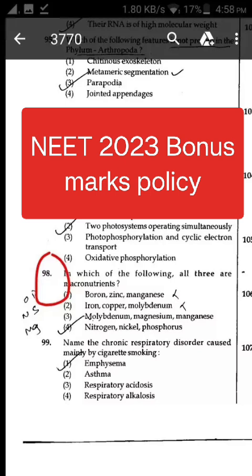Unanswered or marked for review will be given zero marks (0). If more than one option is found to be correct, then four marks (+4) will be awarded to only those who have marked any of the correct options. If all options are found to be correct, then four marks (+4) will be awarded to all those who have attempted the question.